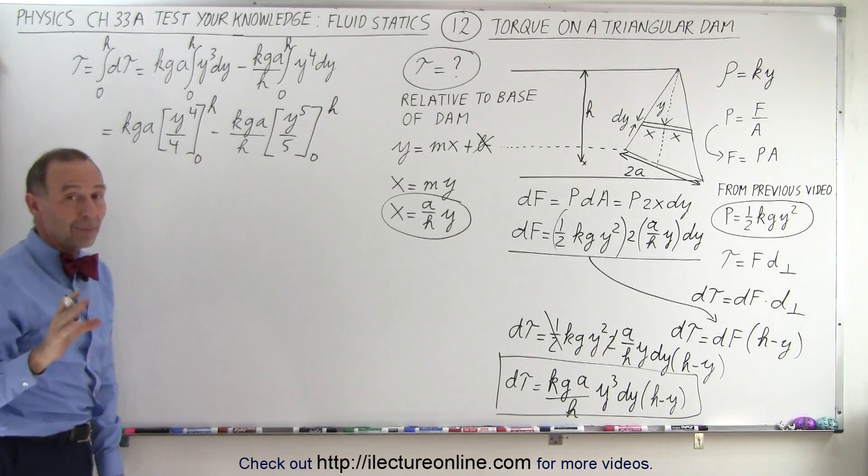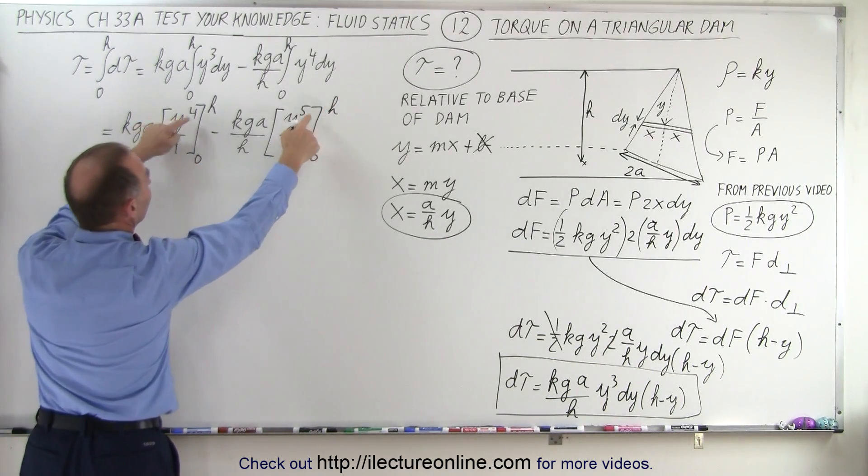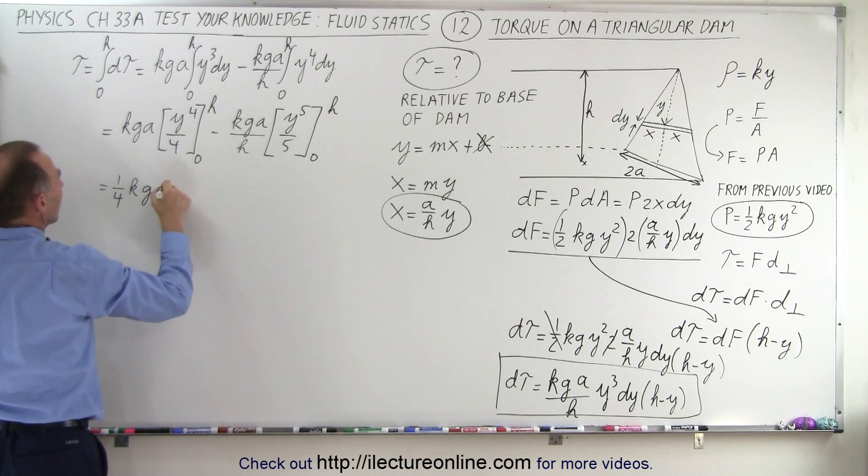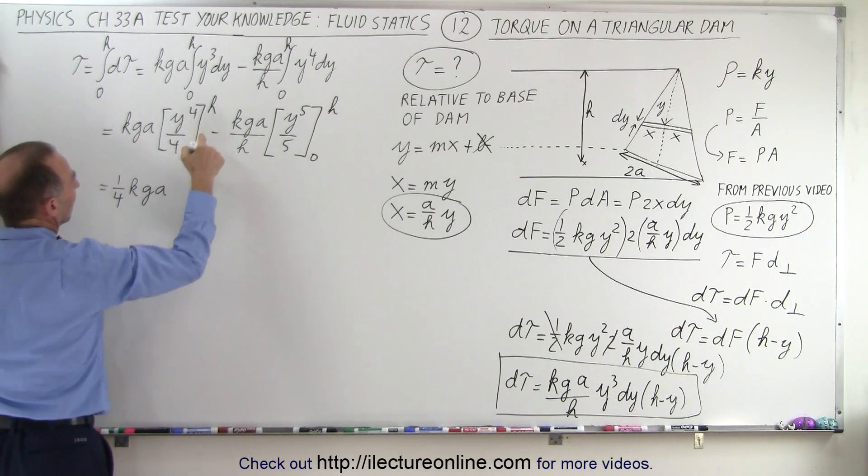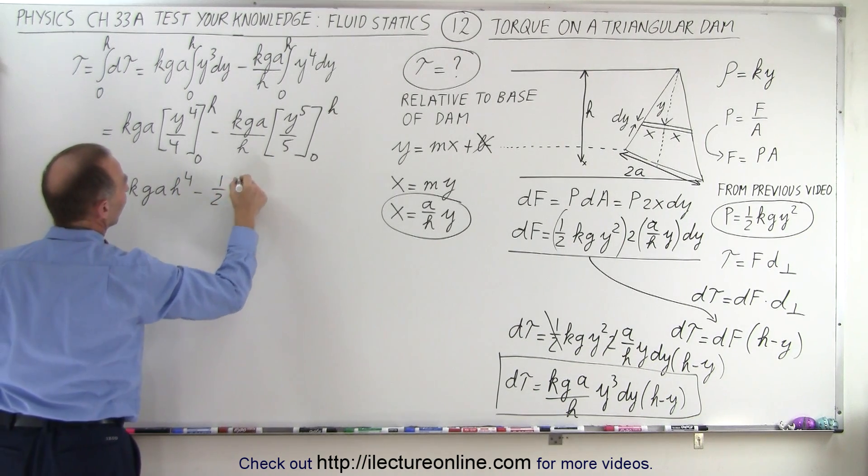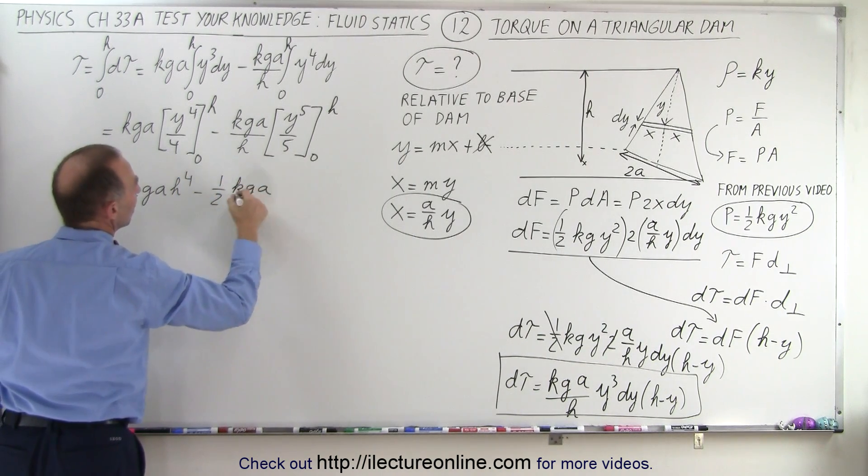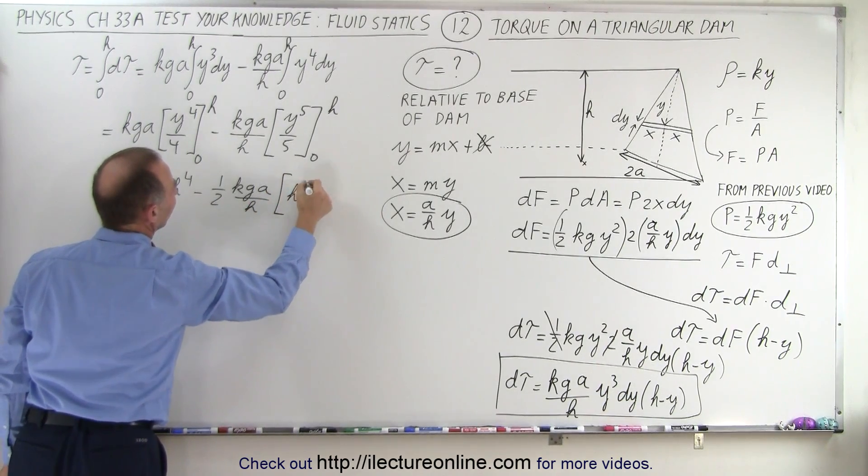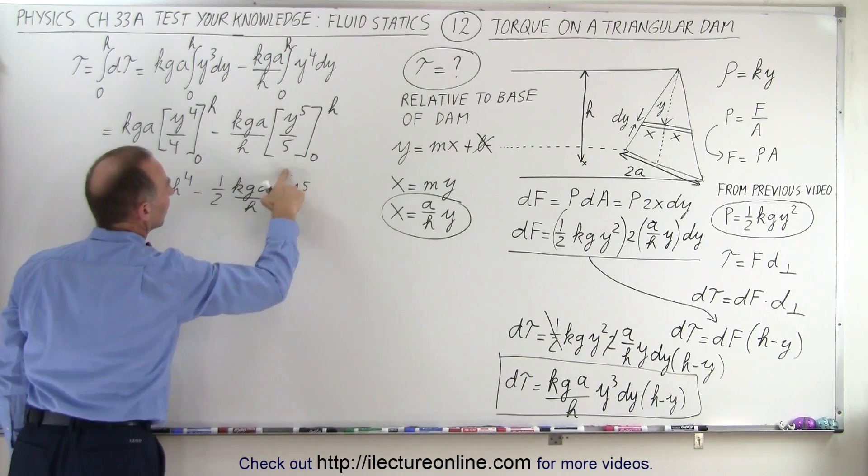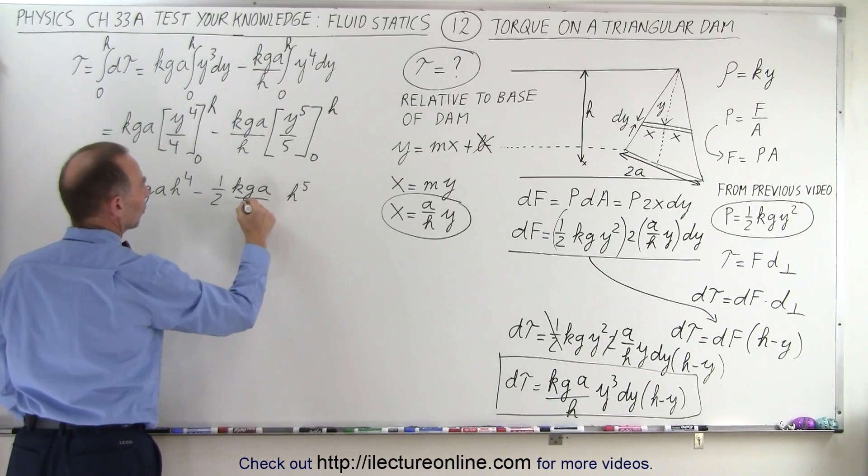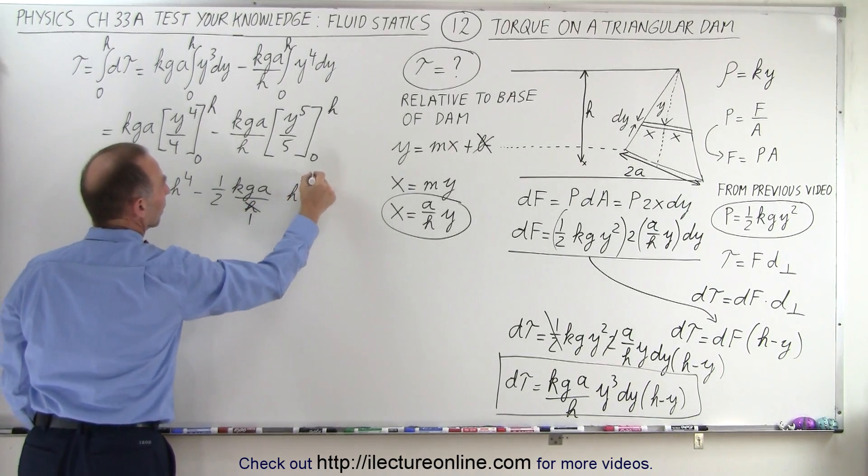And now we can go ahead and plug in the limits. When I plug in the lower limits, I get nothing. When I plug in the upper limits, I get the following. So this is equal to 1 4th Kg A. When I plug in h, I get h to the 4th minus 1 5th Kg A over h times h to the 5th. Now this h will cancel out one of those. So this becomes 1, this becomes 4. And now realize that we have this equal to 1 quarter minus, not 1 half, this is 1 5th. Good thing I caught that.